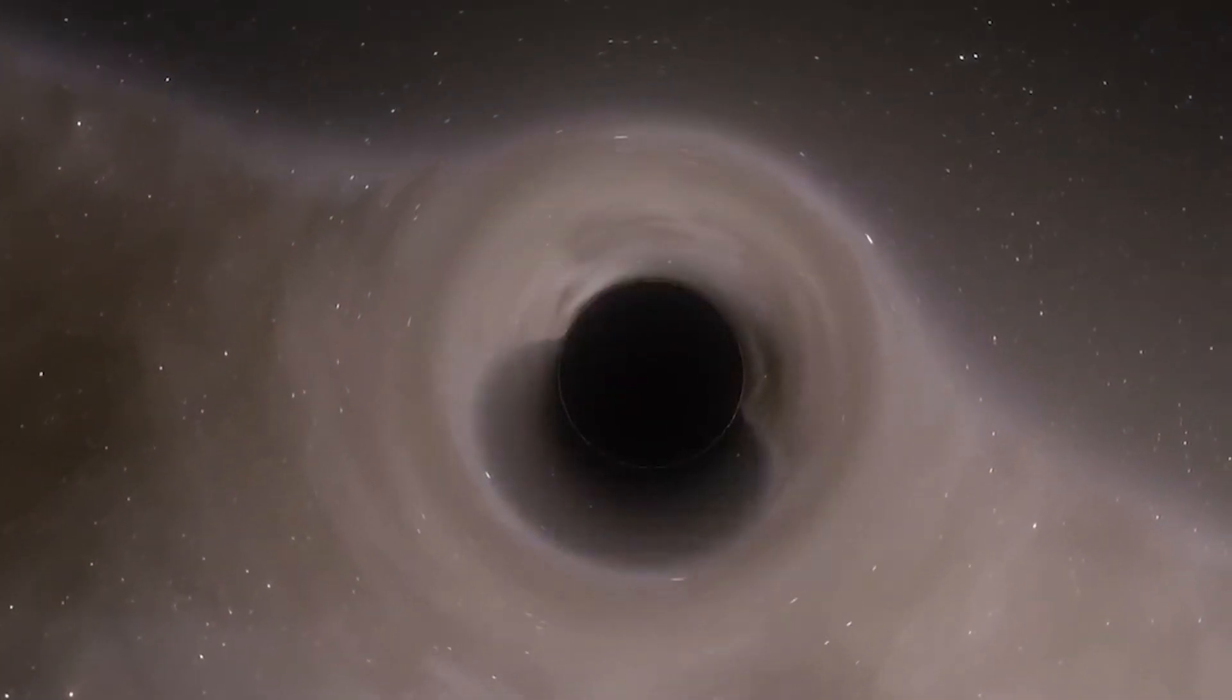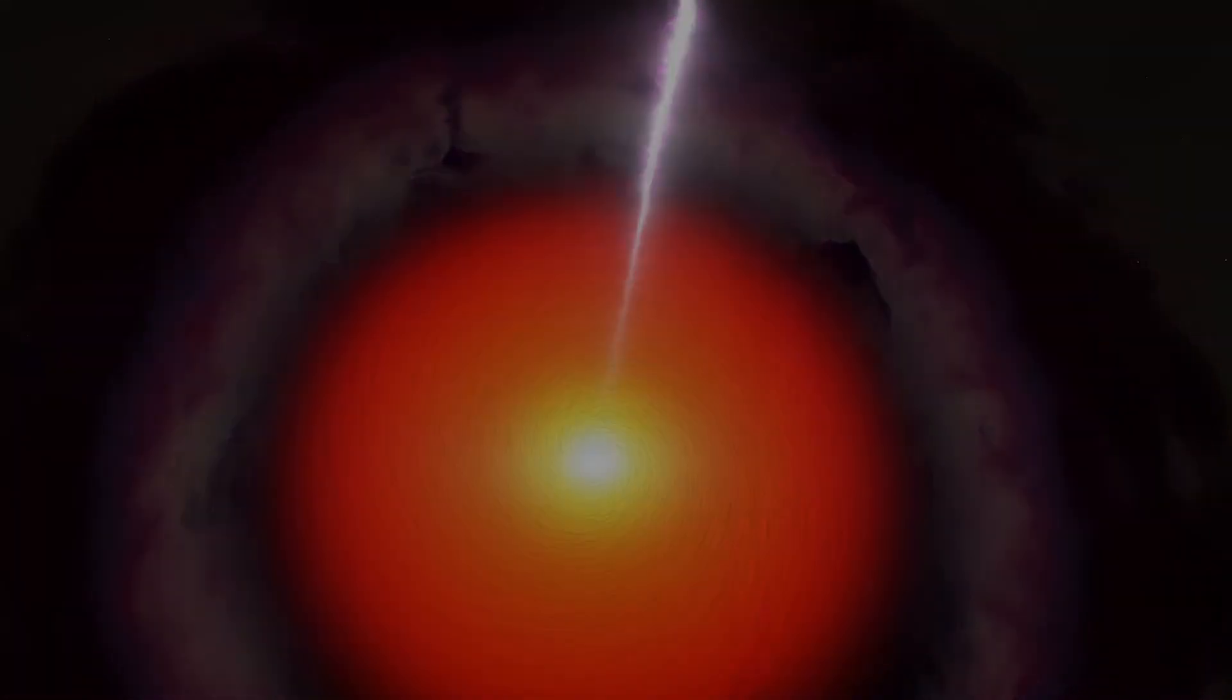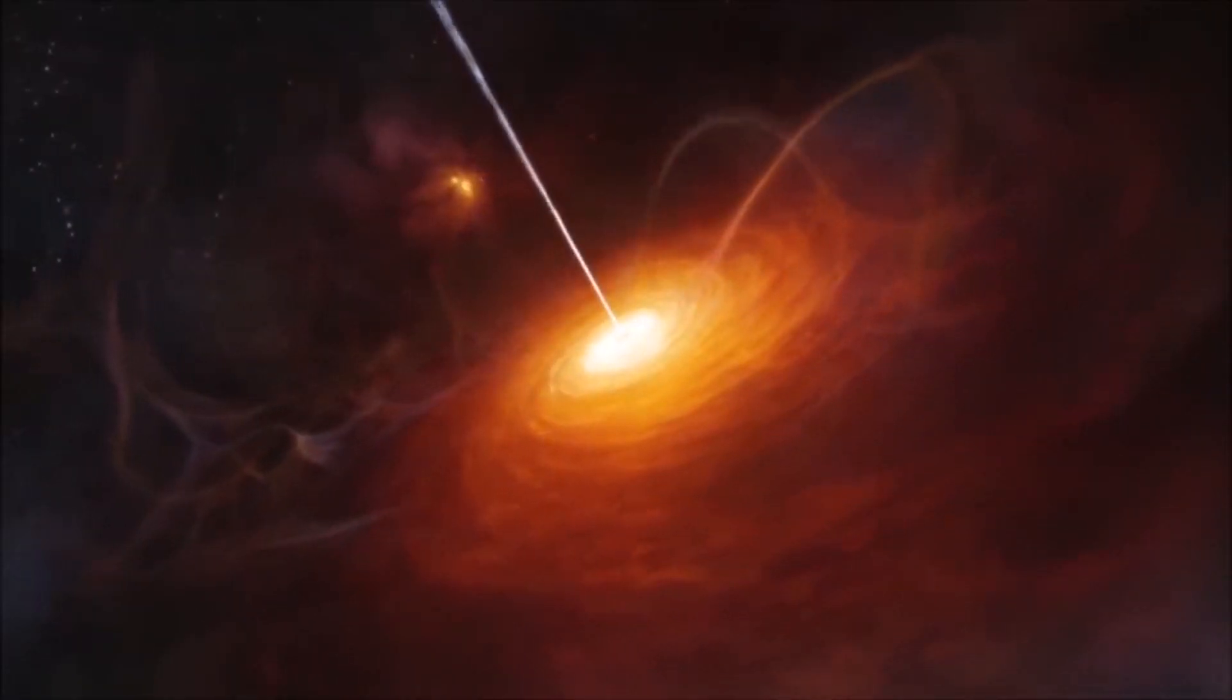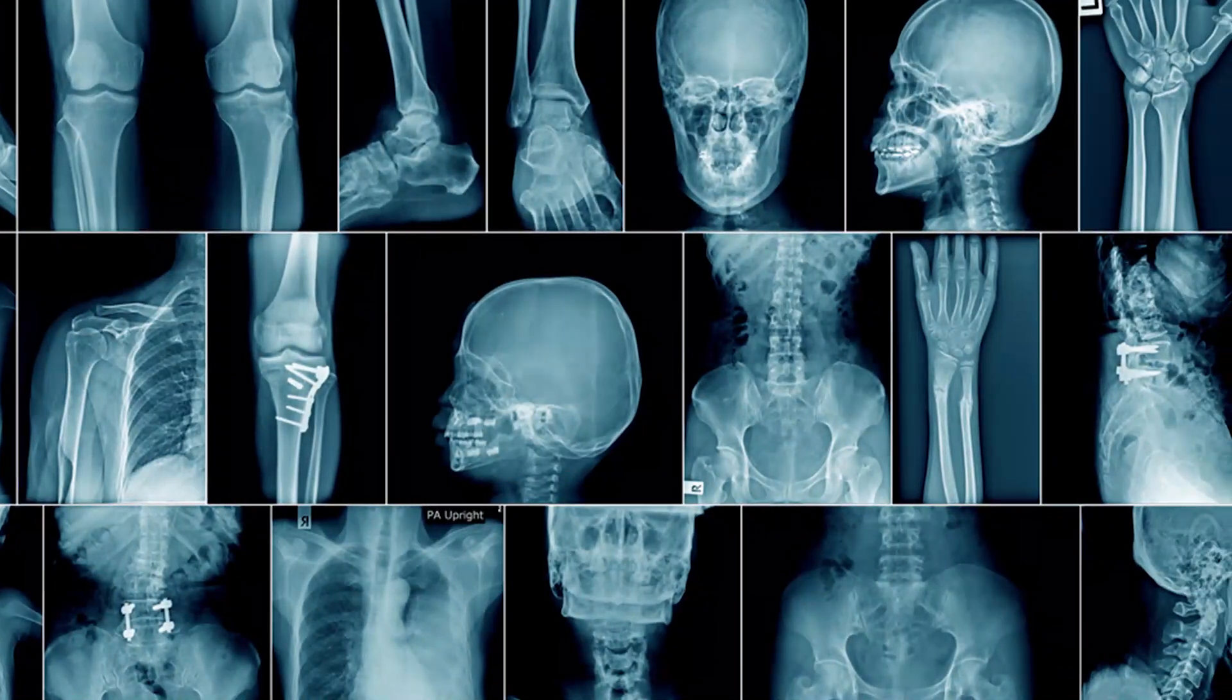The second way is by observing the matter falling into the black hole. As matter falls in, it settles in a disk around the black hole that can get very hot. Some of the energy liberated from falling in is turned into light, which we can then see, for example, in x-rays.